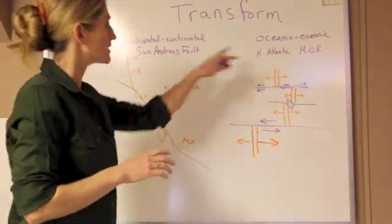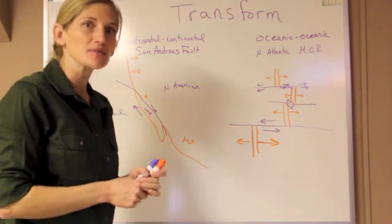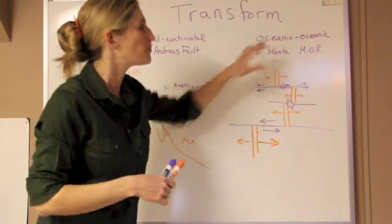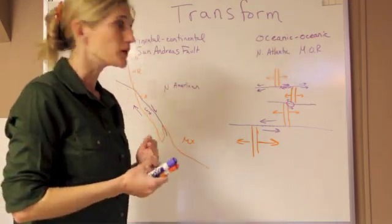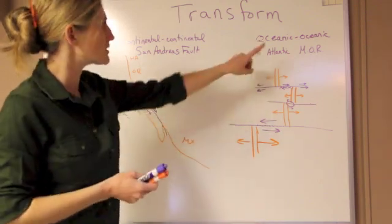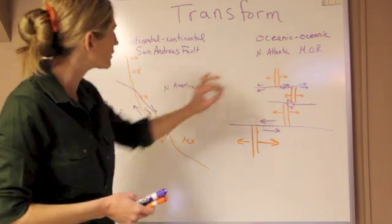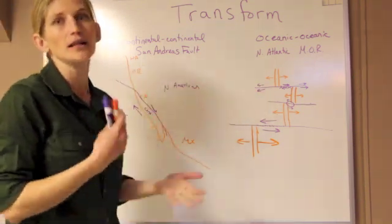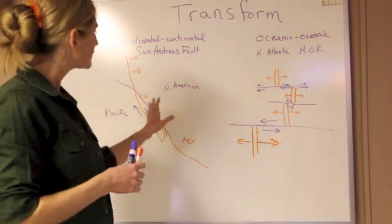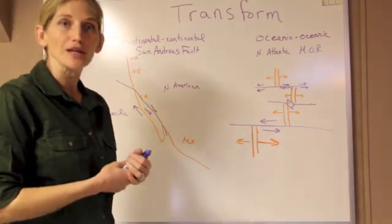Those are the three plate boundaries with examples of where you would find them. Take some time to make sure you understand how the plate type relates to what's showing up at different locations, ensure you have a modern-day analog for each, and understand how the plates are moving and what geographic features are forming at those locations.